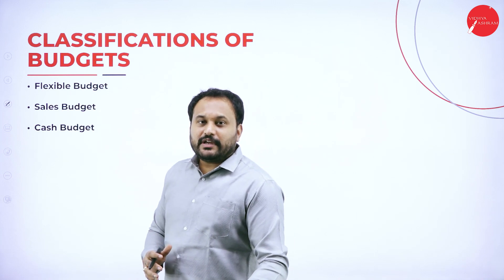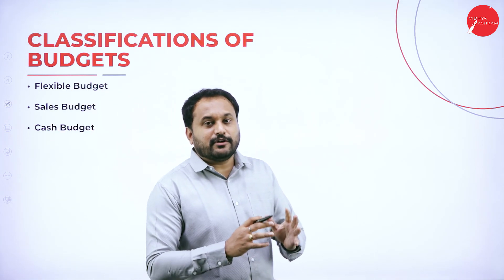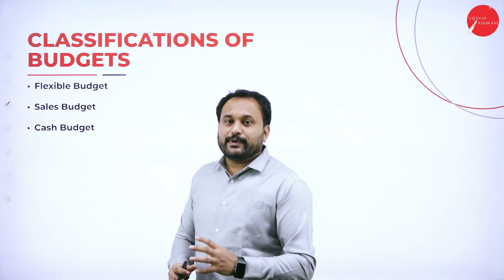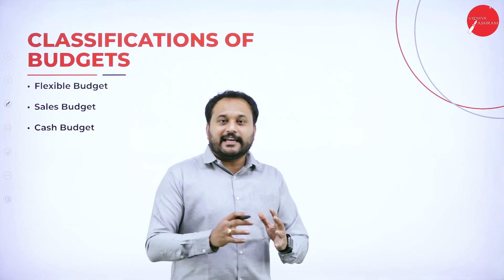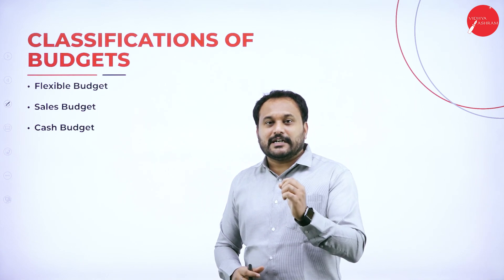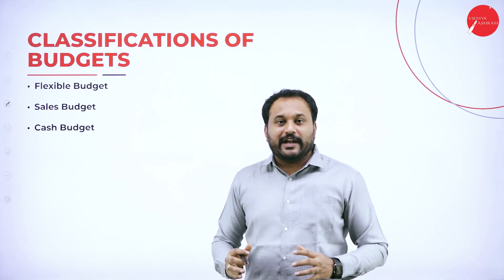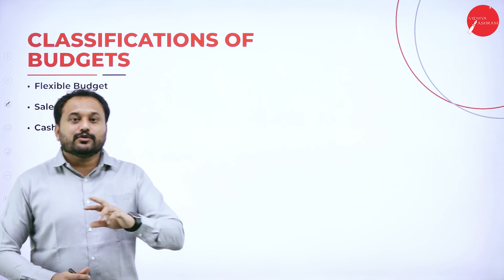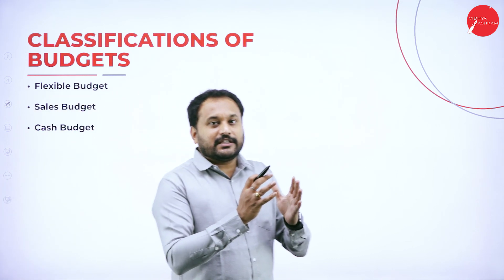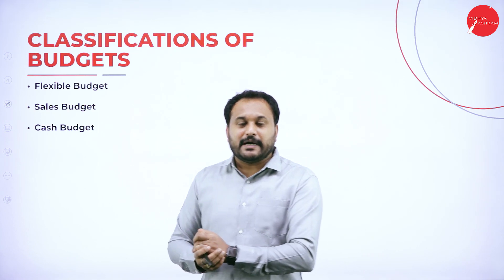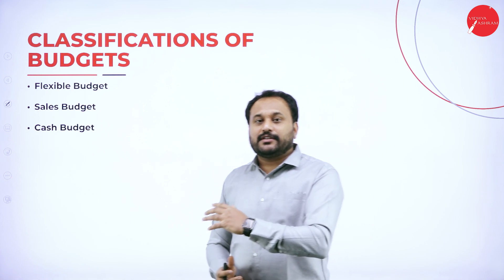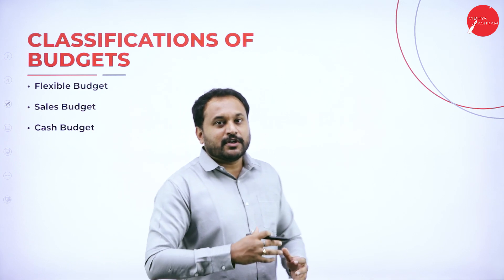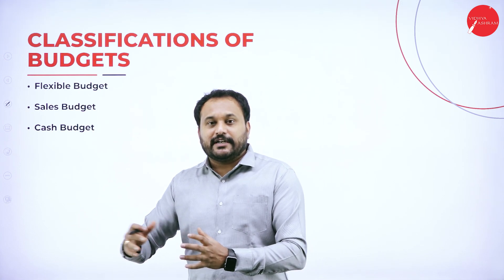The next topic is the classification of budget. There are many classifications, but according to your syllabus we only deal with three: flexible budget, sales budget, and cash budget. Students, you need to understand that this chapter has a weightage of 30 marks. You will get two problematic questions — one in the 15-marks Part A and another in the 10-marks Part B.